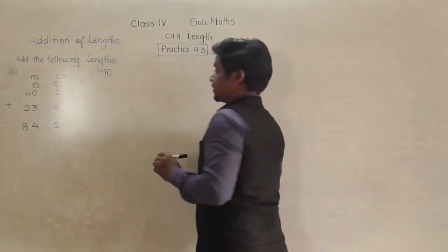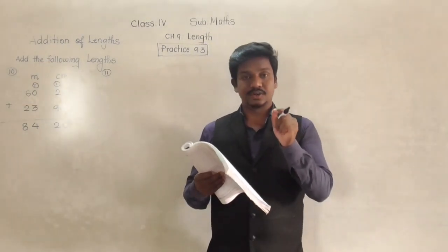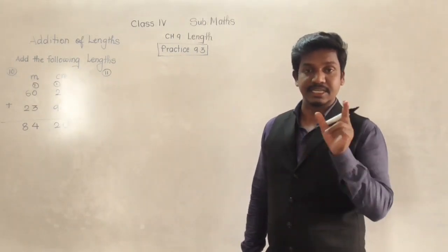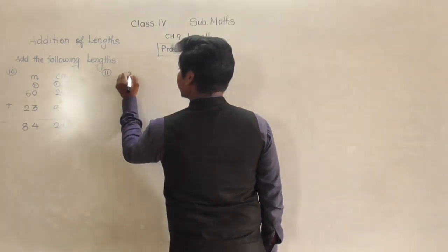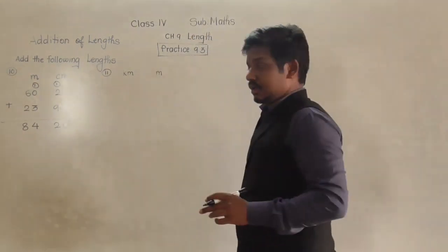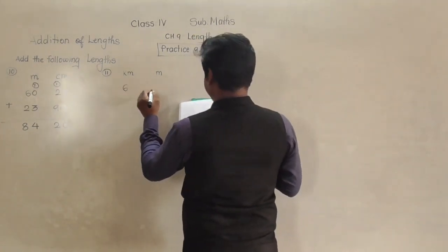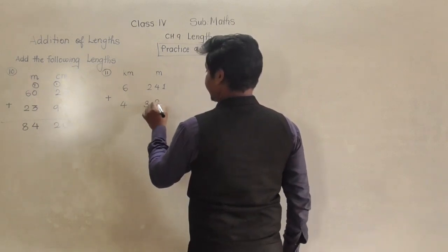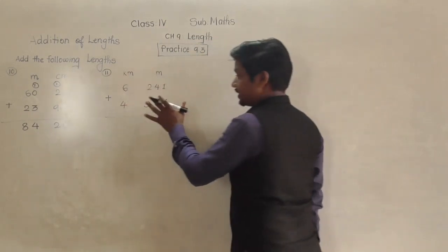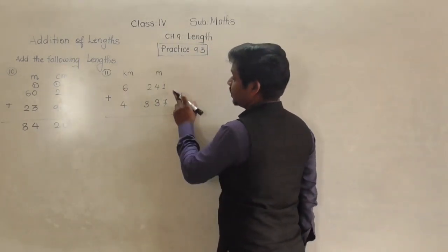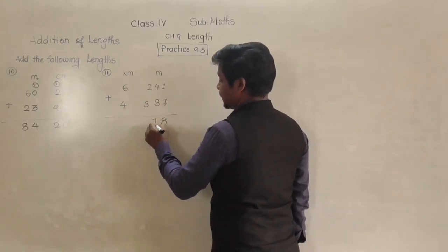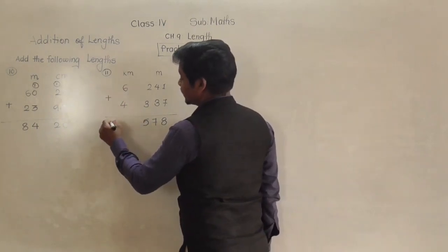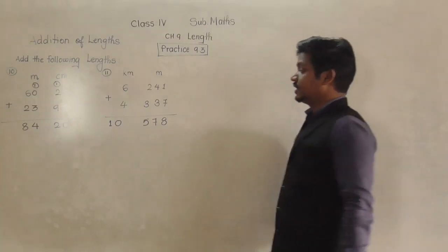Next, question number 11. We have 6 kilometer 241 meter and 4 kilometer 337 meter. Both lengths are given in kilometer and meter, so we make two columns: kilometer and meter. First length is 6 kilometer 241 meter, plus second length is 4 kilometer 337 meter. We add the meter column first: 1 plus 7 is 8; 4 plus 3 is 7; 2 plus 3 is 5. Then 6 plus 4 is 10. So the answer is 10 kilometer 578 meter.